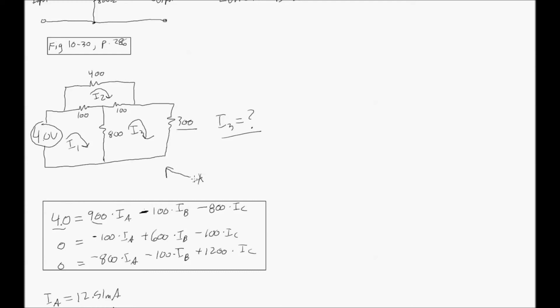actually, instead of I1, I2 and I3, it should be IA, IB and IC. That's just a mistake I made in drawing the loops up there. But going through the mesh equations,